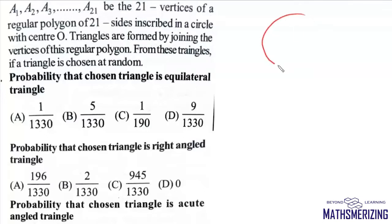So we have this circle with center O and then we have these 21 vertices inscribed. So it is a1, a2, a3 up to a21 and they are all vertices of a regular polygon. Triangles are formed by joining vertices of this regular polygon.